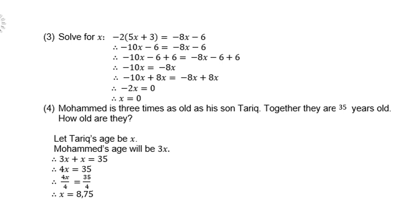Then number 4. Mohammed is 3 times as old as his son Tariq. Together they are 35 years old. How old are they? So what we do is, we let Tariq's age be x. Then Mohammed will be 3x. Remember, Mohammed is 3 times as old as his son. And then together they're 35.